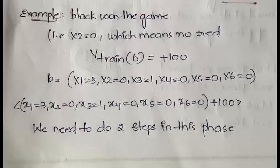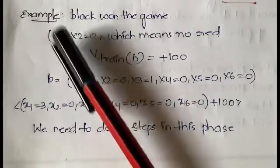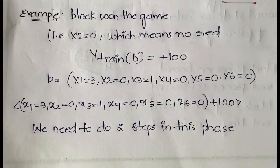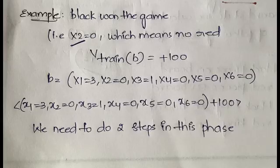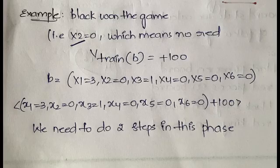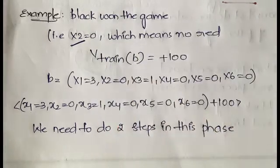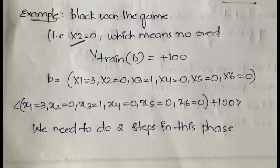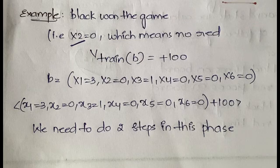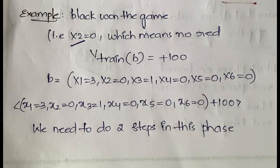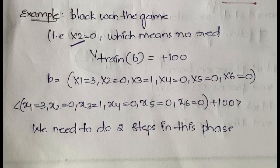Let us look at the checkers example. Assume that black won the game. If black wins, then x2 equals zero — x2 is the number of red coins, so there are no red coins. You must have understood what x1 through x6 represent from step 3. Since there are no red coins, x4 is also zero — x4 represents red kings — and obviously no kings either.